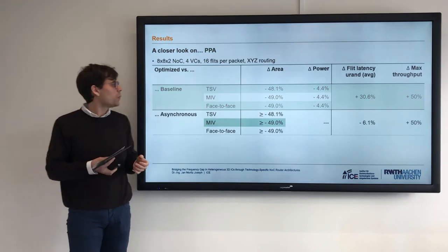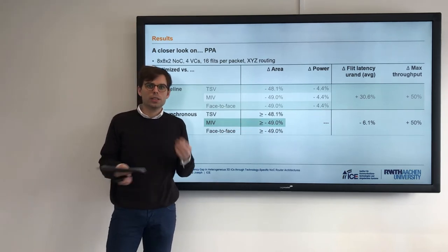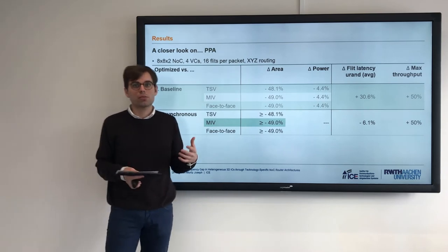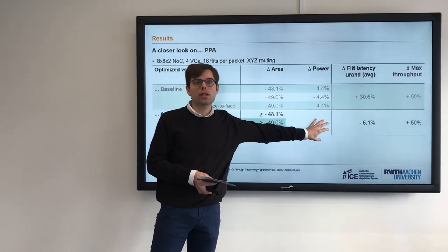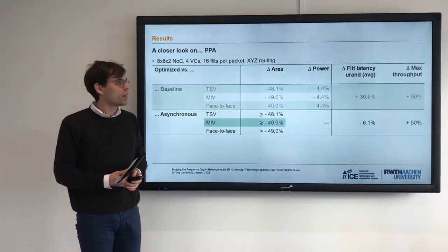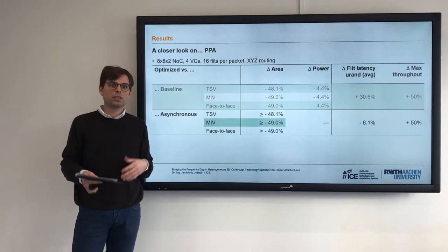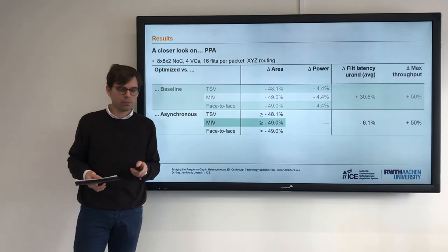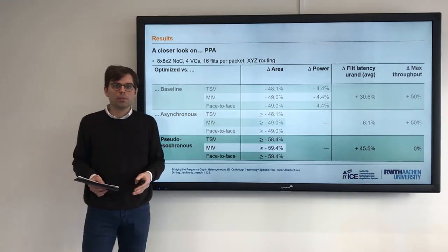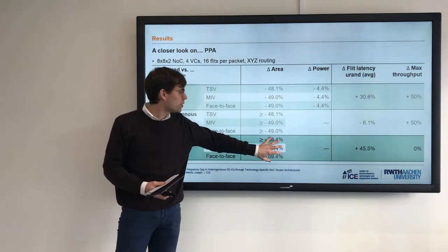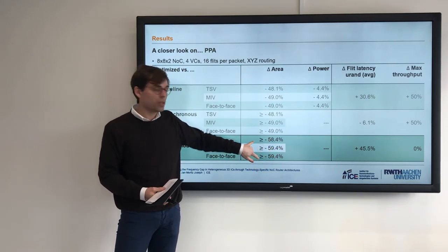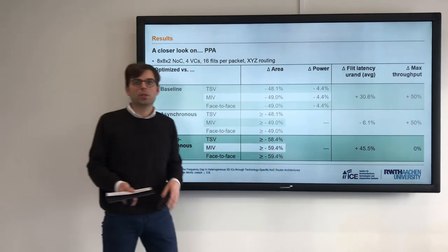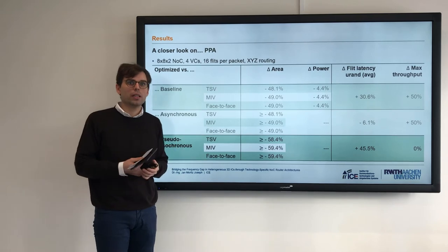For the asynchronous design, there is a higher area overhead due to synchronization logic, which we didn't assess in detail as it depends on physical design constraints. More interesting are the performance results: the asynchronous design outperforms ours in flit latency by 6%, but we achieve 50% higher throughput. Comparing against the pseudo-mesochronous router, there is 10% additional overhead from synchronization and the higher number of TSVs or MIVs required. In terms of flit latency, we improve by 35%, but maximum throughput is the same in both designs.